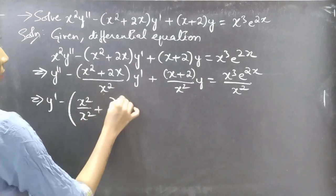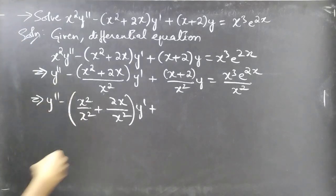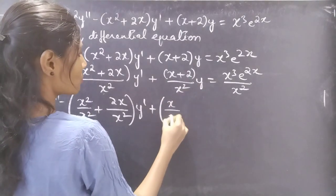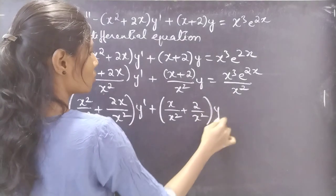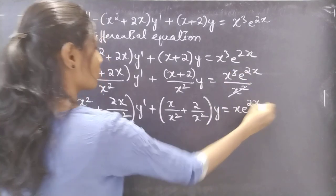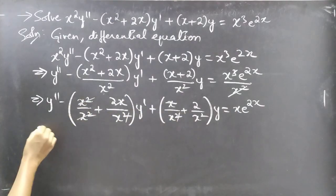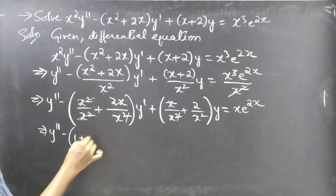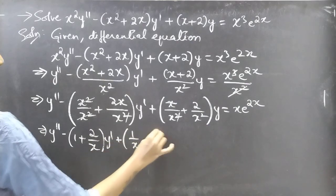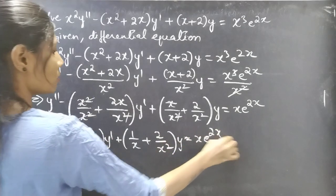Here in the numerator we have two terms and in the denominator one term, so we can split each fraction. After cancellation we get y double dash minus (1 plus 2 by x) into y dash plus (1 by x plus 2 by x squared) into y equal to x e power 2x. Consider this as equation number 1.